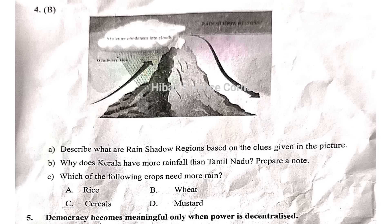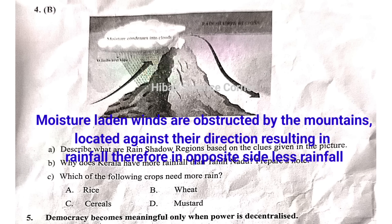Describe what rain shadow regions are based on clues given in the picture. Moist laden winds are obstructed by the mountain located against their direction, resulting in rainfall on one side and less rainfall on the other side — that is the rain shadow region.